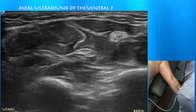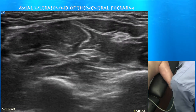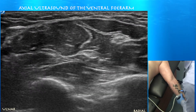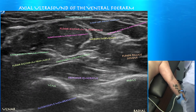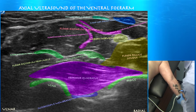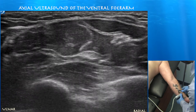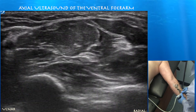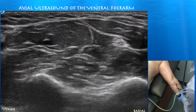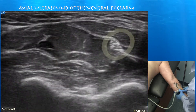Here's a close-up view. You can see the tendons beginning to form the flexor digitorum superficialis muscle and the flexor digitorum profundus. You can see the pronator quadratus muscle, which basically has fibers going about 90 degrees to the other muscles in the forearm. I'm going to go proximal now.